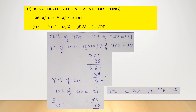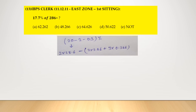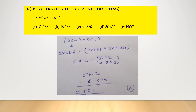Question: 17.7% of 286. 17.7% can be written as 20% minus 2% minus 0.3%. 20% equals 2 × 10% = 2 × 28.6. 2% equals 2 × 2.86, and 0.3% equals 3 × 0.1% = 3 × 0.286. Solving gives a result approximately equal to 50, so option number D.